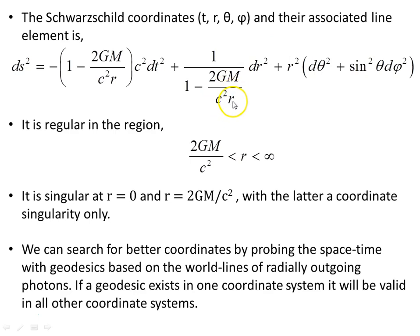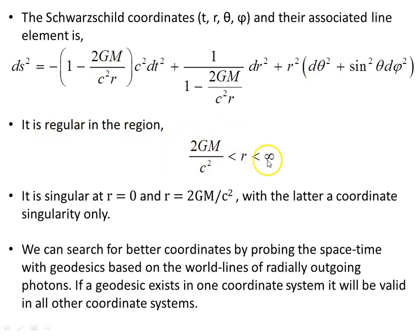At r equals 2GM on c squared, you have a singularity, which turns out it's not a physical singularity — merely only a coordinate one. A real singularity at r equals 0 exists, and this line element is regular, continuous, and defined in the region shown. It is singular at r equals 0, which is a real physical singularity, whereas the Schwarzschild radius is merely a coordinate singularity.